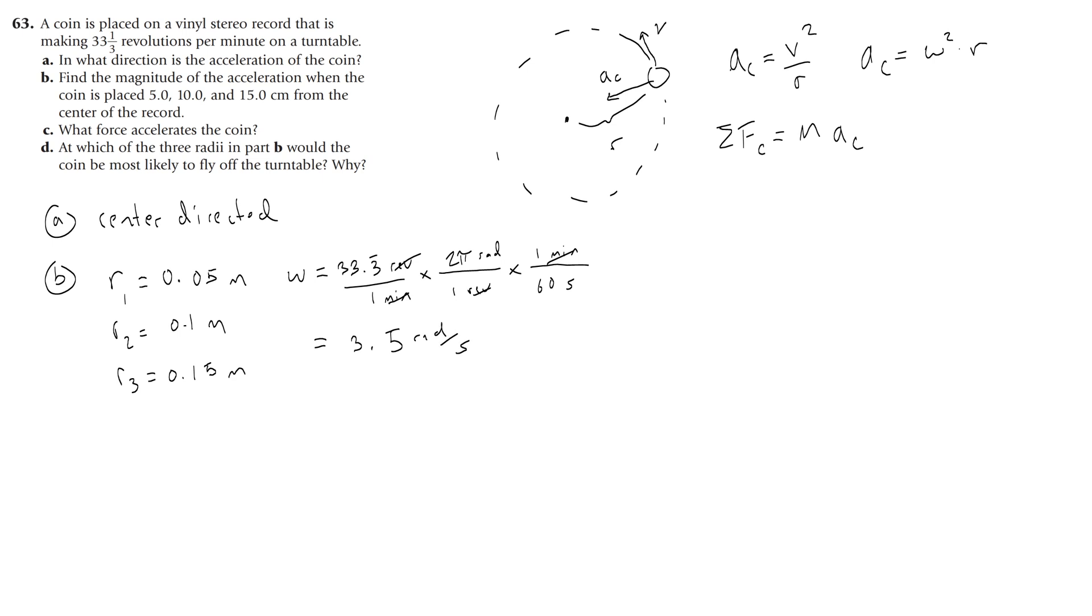Okay, so the reason why you want to use omega for your angular velocity is because part B is asking you to find the accelerations, and you can use this equation to find them.